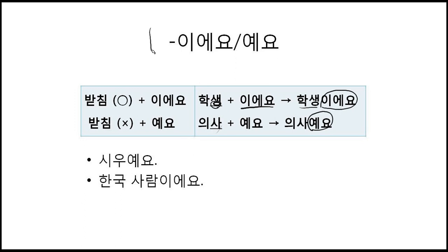To summarize: when there is an ending consonant in the previous noun, 이에요 is attached; when there is no ending consonant, 예요 is attached. Before 이에요 and 예요, there is always a noun. For example, 시우예요 — 시우 is a Korean name with no ending consonant, so 예요 is attached: I am 시우, you are 시우, she is 시우. And 한국 사람이에요 — 한국 사람 means 'Korean.' In the last syllable there is an ending consonant, so 이에요 is attached: I am Korean, she is Korean, he is Korean.